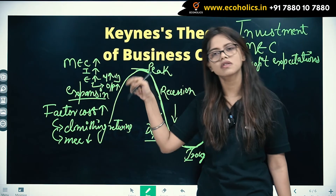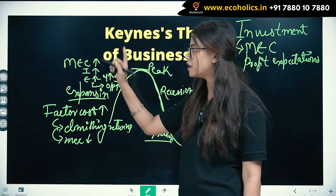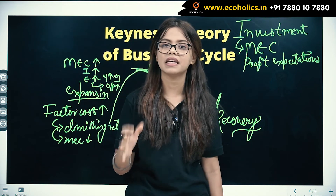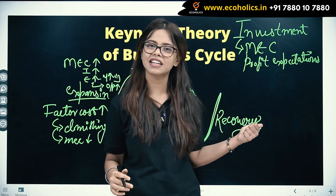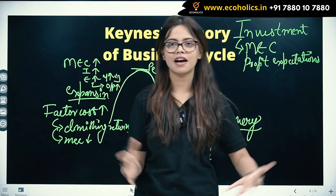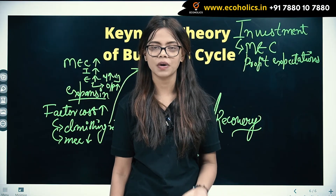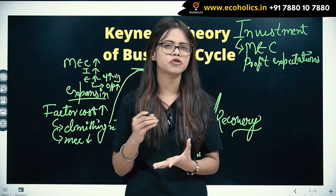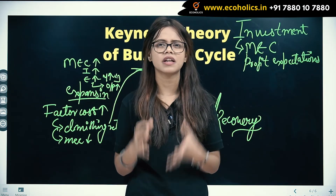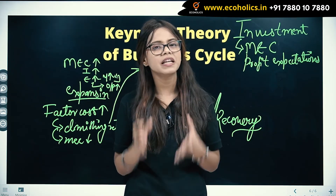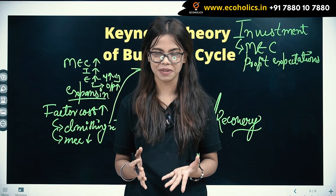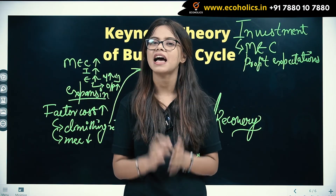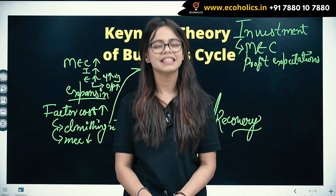So this is how the chain goes: the variations come because of investments, and investments depend upon your MEC. I hope the theory is clear to all of you. If you want us to make videos on specific topics, concepts, or subjects, please let us know in the comment section below. If you liked this video, please like, share, comment, and subscribe to our channel Echoholics. Thank you.